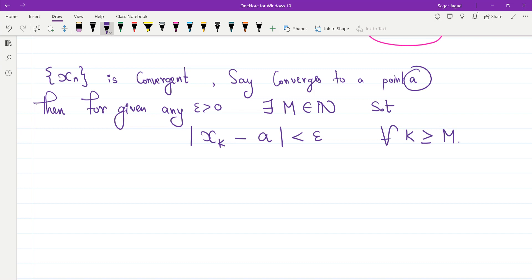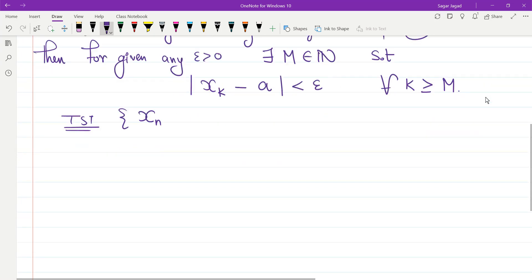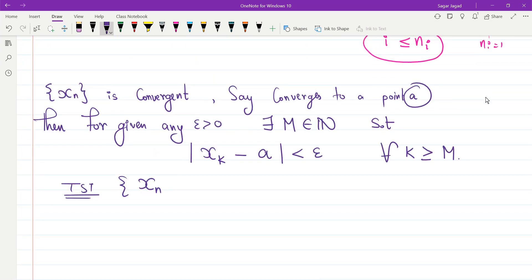Now I want to show that my subsequence xnk—I think I used k over there, so I'll change it again, let it be p. So xnp also converges to the same point a.